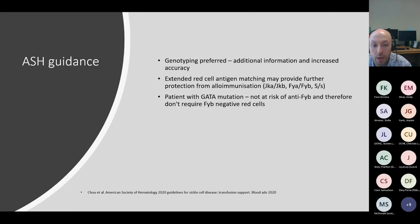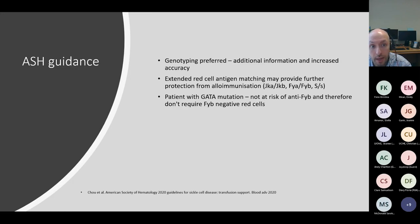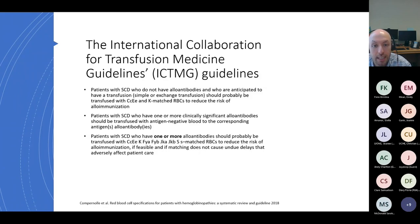The American Society of Hematology guidance has issued ten recommendations, mainly conditional due to the lack of good evidence, but similar to BSH recommendations. Extra recommendations include that genotyping is preferred to provide additional information. It also recommends that extended red cell antigen matching — for Kidd, Duffy, and S — may provide further protection. It makes the point that if a patient has a GATA mutation detected on genotyping, that patient is not a true null phenotype and is not at risk of developing anti-Duffy B.